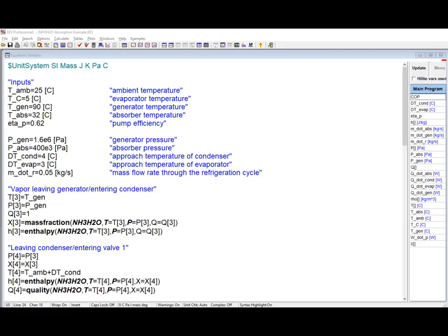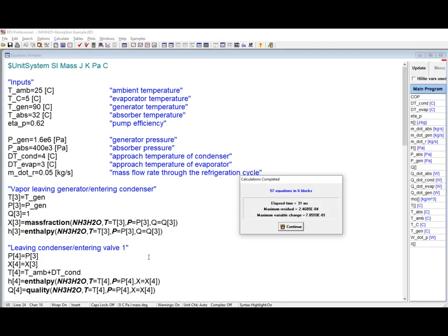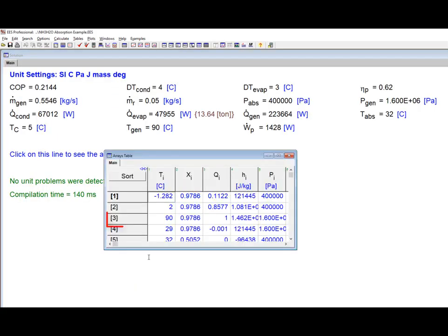The EES file that simulates this cycle begins by setting the unit system using the dollar unit system directive and then by entering the known information. The flow leaving the generator here at state 3 is at the generator pressure and temperature and its saturated vapor. Therefore, its state is fixed by P, T, and Q or quality. Here we get the mass fraction and the enthalpy at this state and you will notice that the mass fraction is 0.9786. So this flow is almost 98% ammonia with very little water in it.